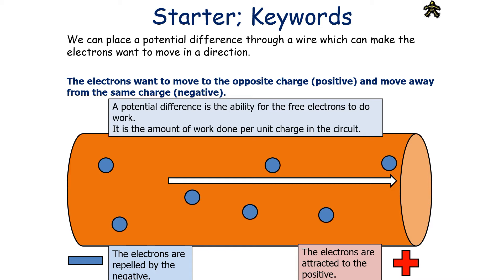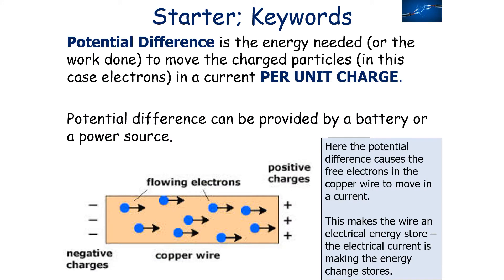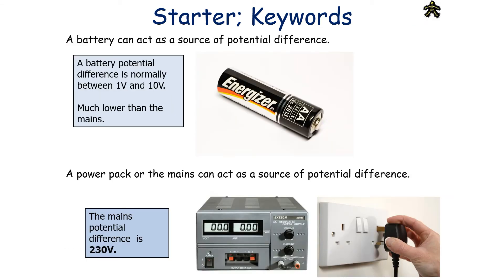The potential difference is the amount of work done per unit charge in the circuit. It is the energy needed, or work done, to move the charged particles — in most cases electrons — in a current per unit charge. The potential difference can be provided by a battery or a power source, causing the free electrons in the copper wire to move in a current. A battery can act as a store of potential difference, or a power pack or mains can act as a source of potential difference. The value of the mains potential difference is 230 volts, which is a value you should memorise.